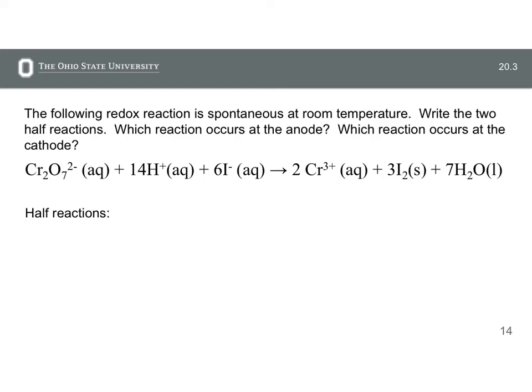Let's look at a problem where we have a redox reaction. This is an overall balanced redox reaction. And this reaction occurs spontaneously at room temperature. Let's write the two half reactions based on this overall reaction and then determine which reaction occurs at the anode.